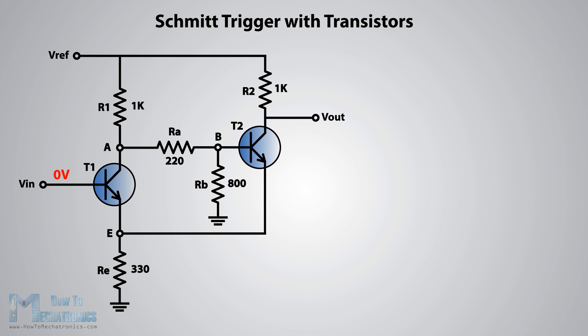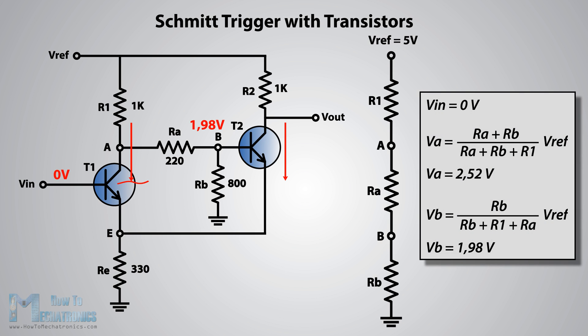That means that the transistor T1 is cutoff and not conducting. On the other hand the transistor T2 is conducting because we have a voltage of about 1.98 volts at the B node as we can consider this part of the circuit as a voltage divider and calculate the voltage using these expressions.